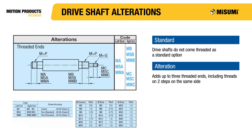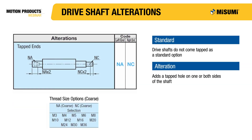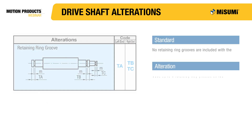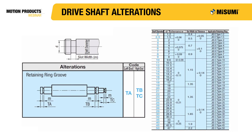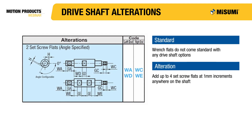Due to the higher precision required for drive shafts, Misumi publishes the thread accuracy standard rating to ensure proper selection. Retaining ring grooves can also be added to drive shafts; the groove location is configurable in one millimeter increments, but the width is predetermined based on shaft diameter. Drive shafts have the option to add up to four flats at any designated part of the shaft, with the option of a second flat at the same location in 30 degree increments.